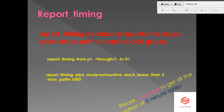The report_timing command generates a report containing timing information for the current design. By default, it reports the single worst setup path for each scenario specified by the modes, corners, or scenarios option. If none of these options are specified, the command reports the single worst path over all scenarios of the design.